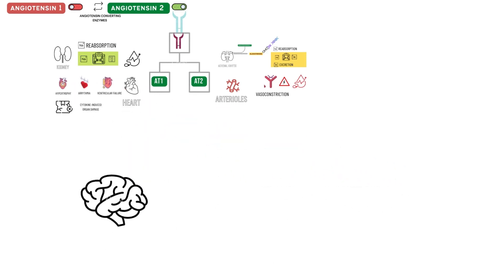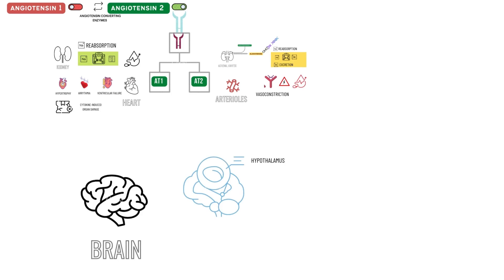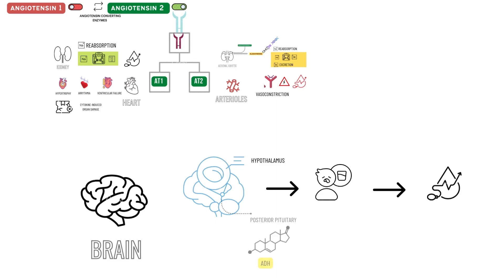Finally, here's how angiotensin 2 acts on the brain. Angiotensin 2 acts at the hypothalamus to stimulate the sensation of thirst, resulting in an increase in fluid consumption. This helps to raise the circulating volume and in turn, blood pressure. It also increases the secretion of antidiuretic hormone from the posterior pituitary gland, resulting in the production of more concentrated urine to reduce the loss of fluid from urination. This allows the circulating volume to be better maintained until more fluids can be consumed.